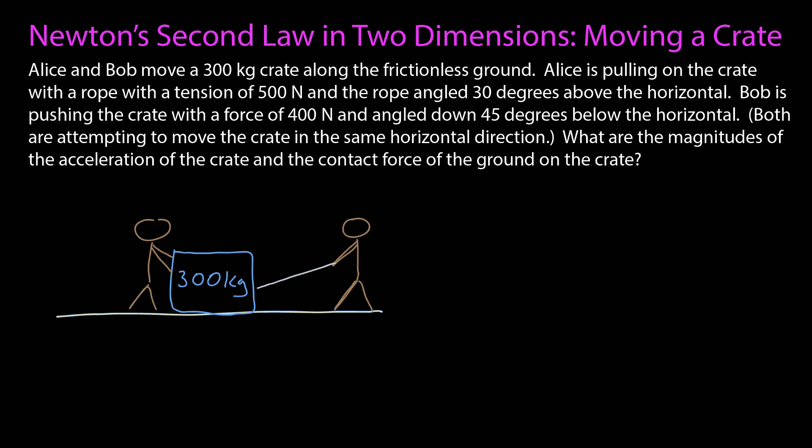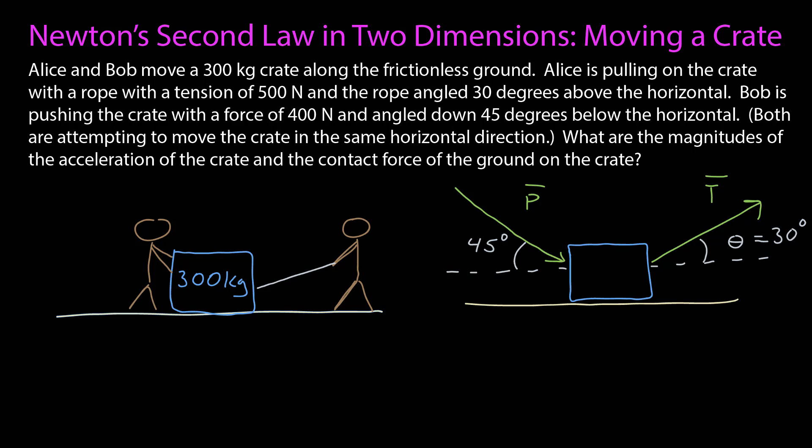First thing — always a picture. We have this crate moving across the ground. Alice is pulling on it with a rope and Bob is pushing it. It's going to accelerate here to the right. I'd like to simplify my picture to more of a schematic representation so I can get an idea of these forces and angles. Now I have just this box, and I know there's a tension force angled 30 degrees above the horizontal and a pushing force 45 degrees below the horizontal. I like this schematic alongside my picture — the picture gives a good visualization and this gives a less cluttered view of the forces and their angles.